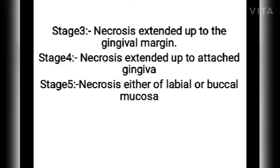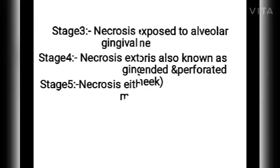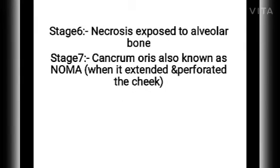In stage 3, necrosis is present in the interdental papilla. In stage 4, necrosis is now extended to the attached gingiva. In stage 5, necrosis is present in either the labial or buccal mucosa. In stage 6, necrosis is now exposed to the alveolar bone. Stage 7 is cancrum oris, also known as Noma.